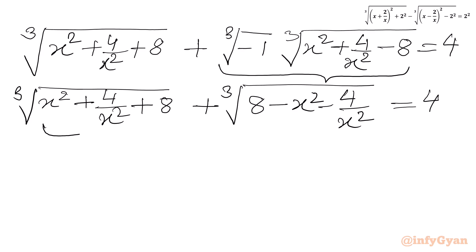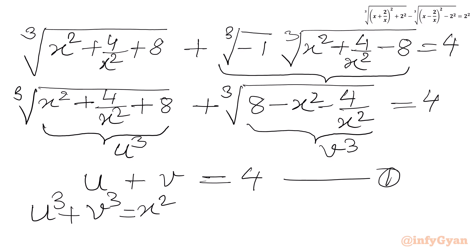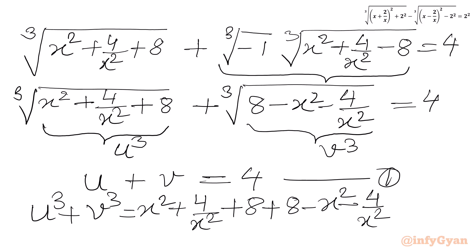Now we will use substitution. Let the first radicand equal u³ and the second radicand equal v³. So cube root of u³ plus cube root of v³ equals 4, which gives u + v = 4. Let this be equation 1. Now u³ + v³ equals (x² + 4/x² + 8) + (8 − x² − 4/x²) = 16. Let this be equation 2.